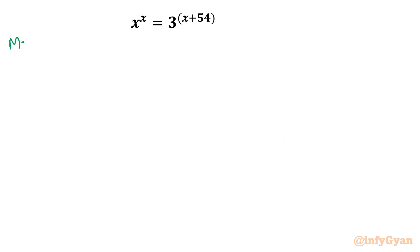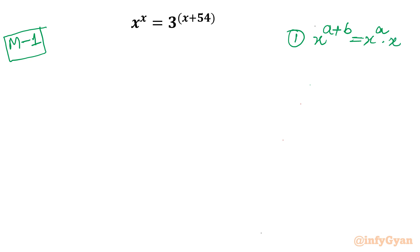Method number one: using exponent properties. The first property of exponents states that x^(a+b) = x^a · x^b. So I will write the right-hand side as 3^x · 3^54, and the left-hand side remains as it is.